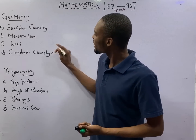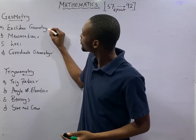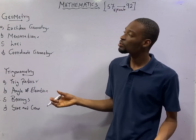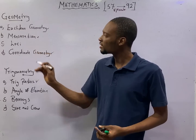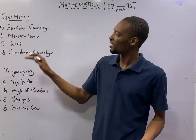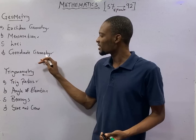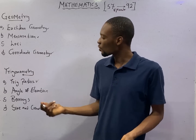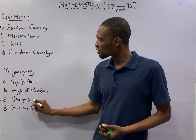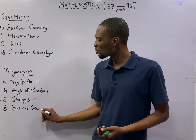At least we touched one question under mensuration. We have touched at least one question under Euclidean geometry — all these angles, polygons, triangles, quadrilaterals, they are under Euclidean geometry. Cord, sector, and so on — they are under mensuration. Then we are touching at least our first question under coordinate geometry. Somehow we've touched trig ratio. We've touched bearing.